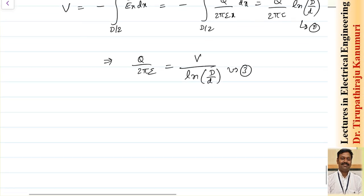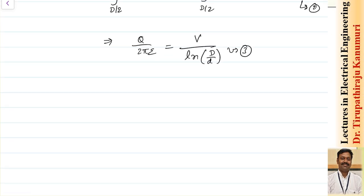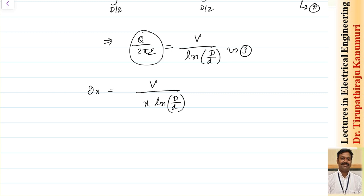Substituting equation 3 into equation 1, the electric gradient becomes: g(x) = V / [x · ln(D/d)], in kV per centimeter. Please remember this formula.